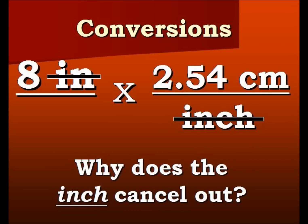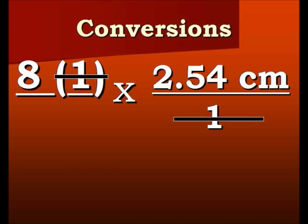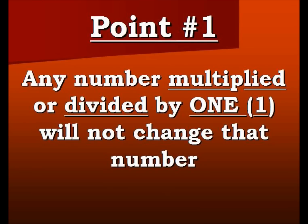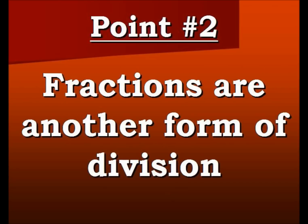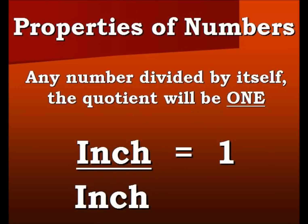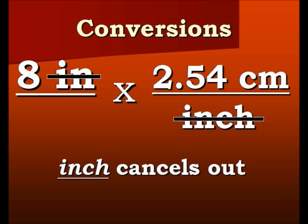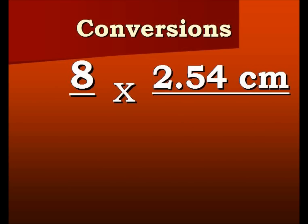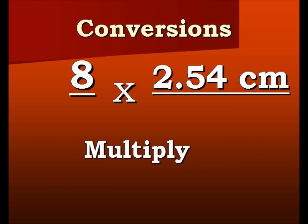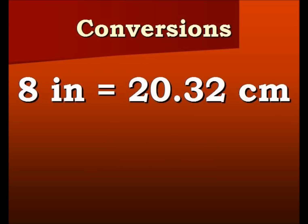People ask: why do the inches cancel out? Think of the inch as the number 1 — multiplying or dividing by 1 is not going to change the problem. Fractions are just another form of division, and any number divided by itself equals 1. Since 1 inch divided by 1 inch is 1, we can take them out because they cancel each other out. The inches cancel out because they're being divided against each other. We have just 8 times 2.54 centimeters. We multiply across and our solution is 20.32 centimeters equals 8 inches.